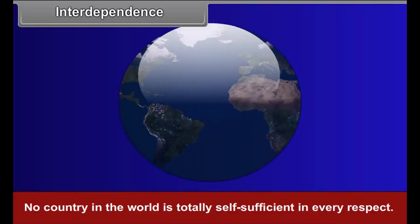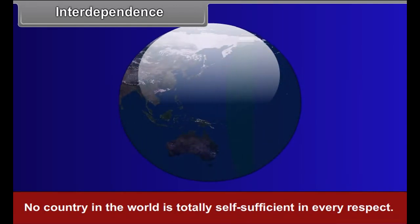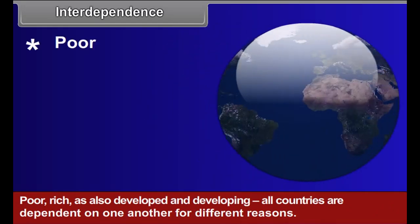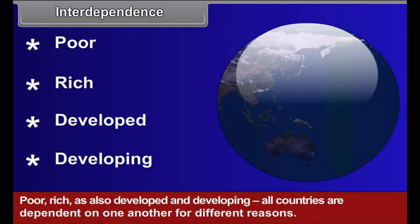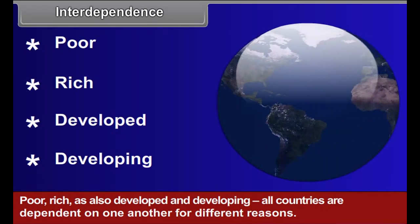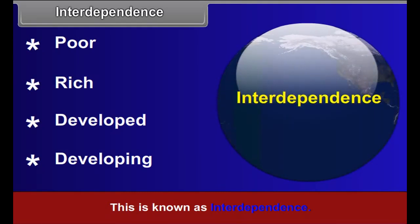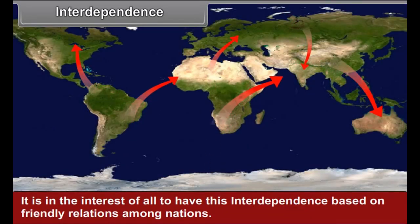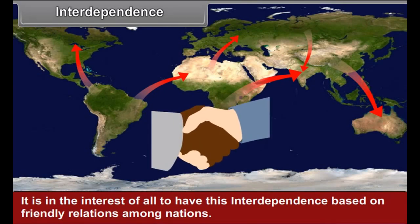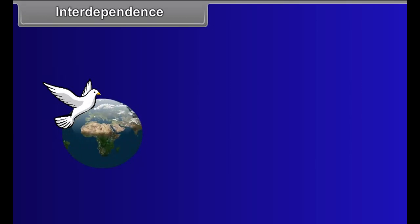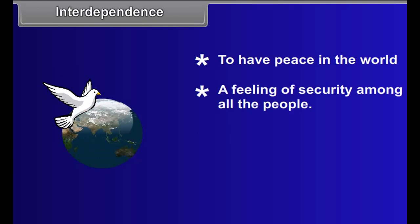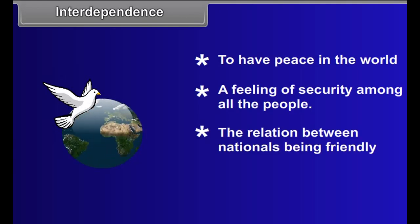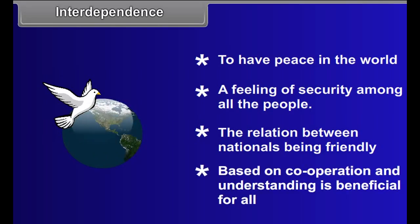Interdependence: No country in the world is totally self-sufficient in every respect. Poor, rich, as also developed and developing — all countries are dependent on one another for different reasons. This is known as interdependence. It is in the interest of all to have this interdependence based on friendly relations among nations. It is extremely important to have peace in the world and a feeling of security among all the people, and for the relations between nations to be friendly and based on cooperation and understanding, which is beneficial for all.